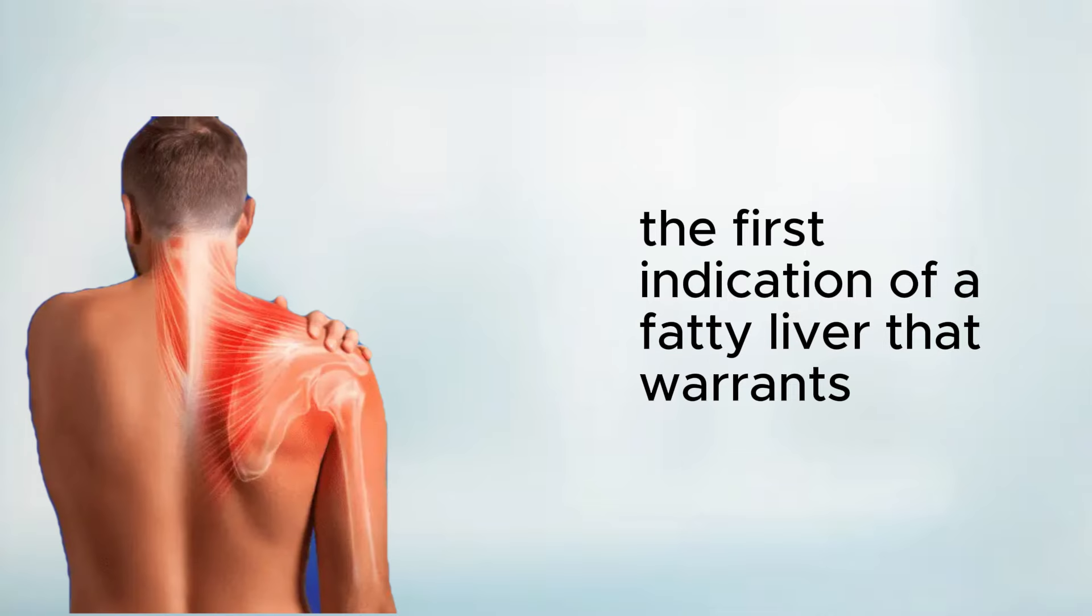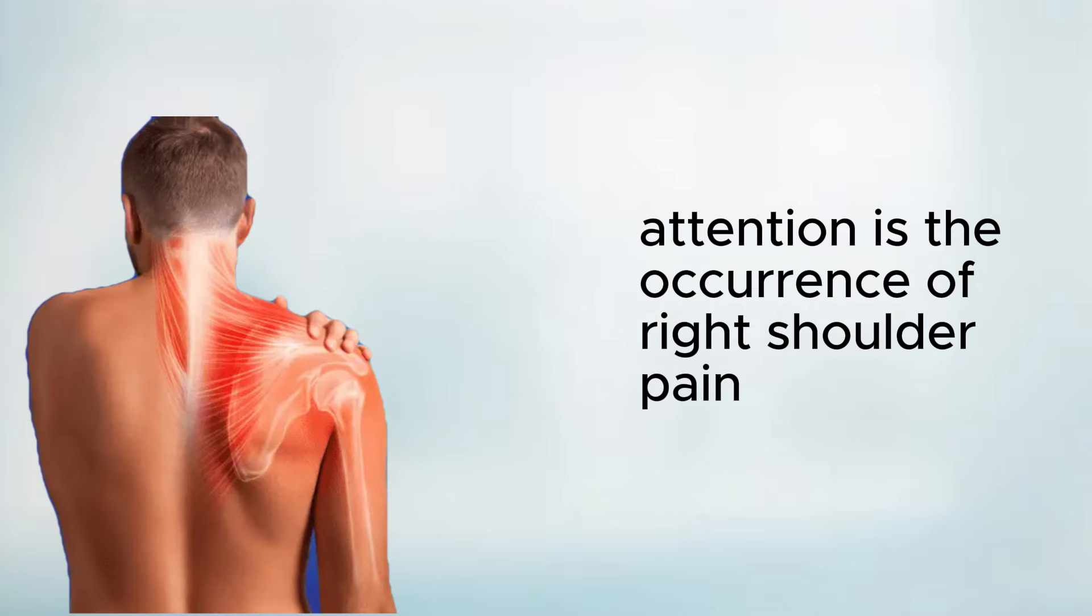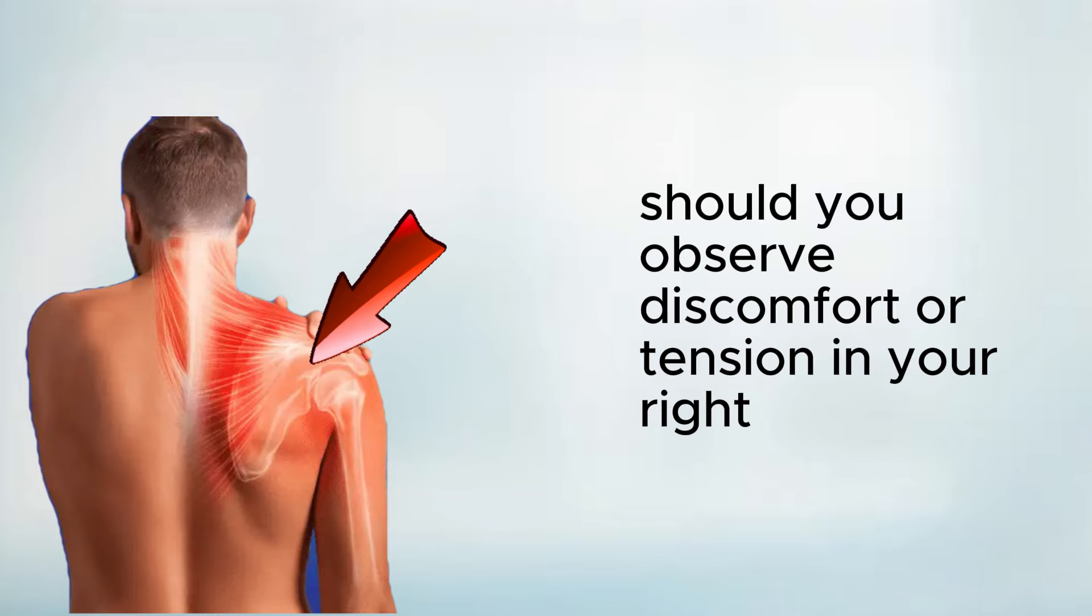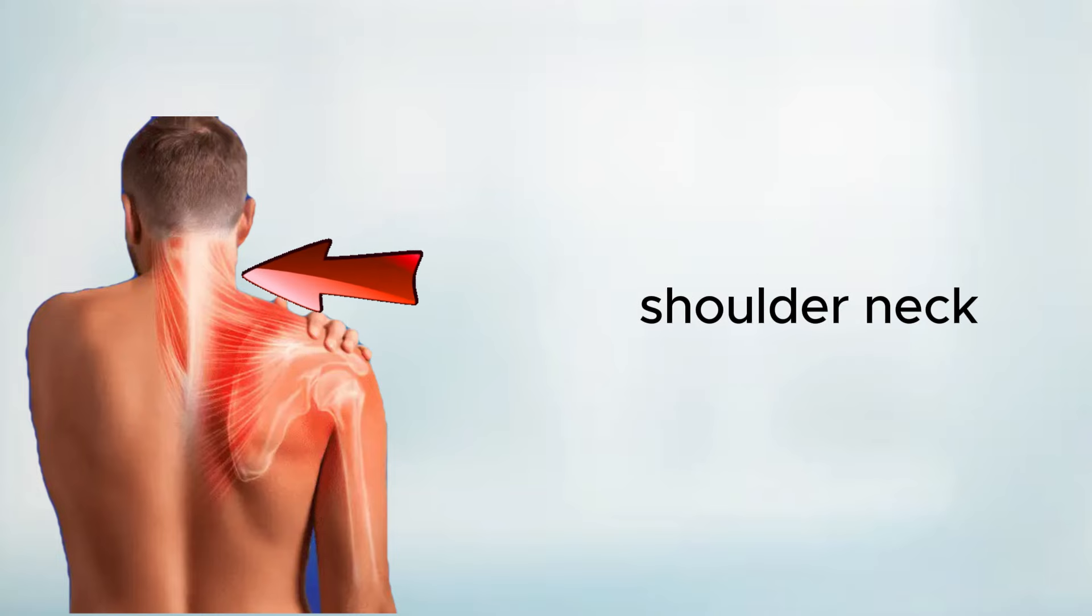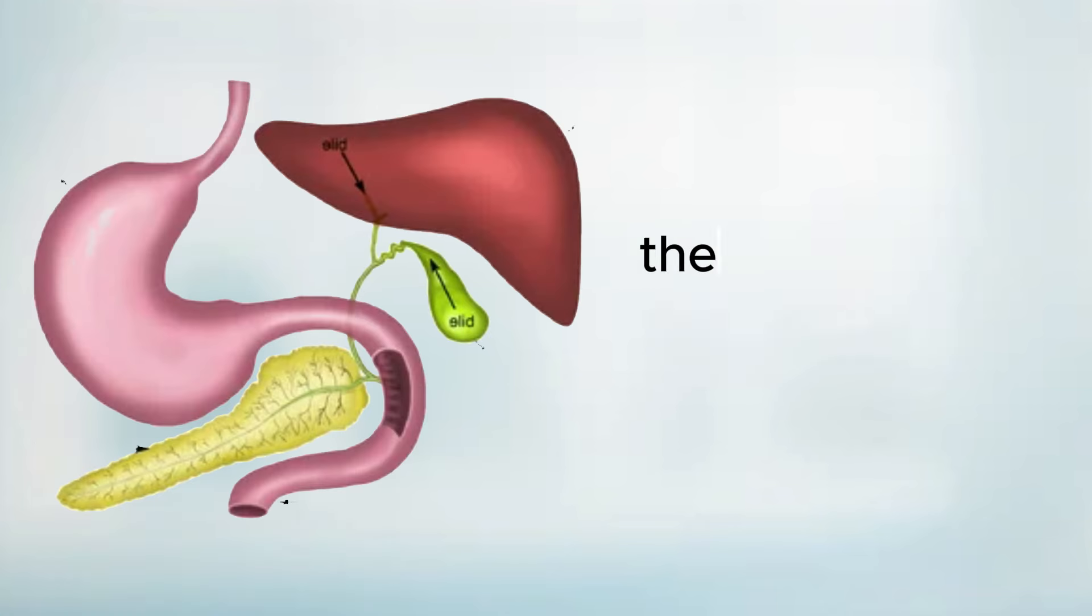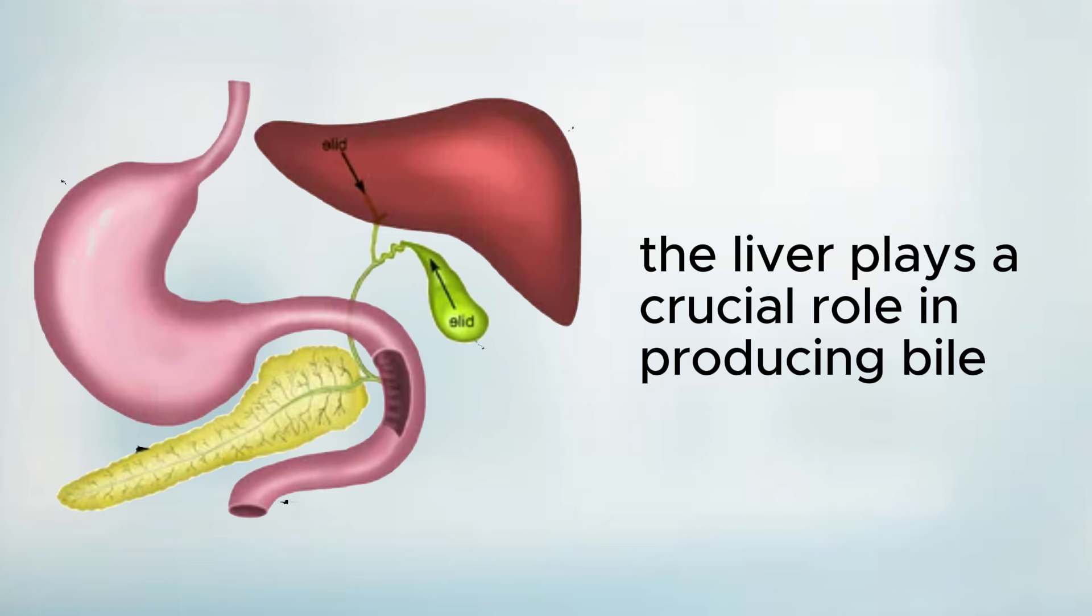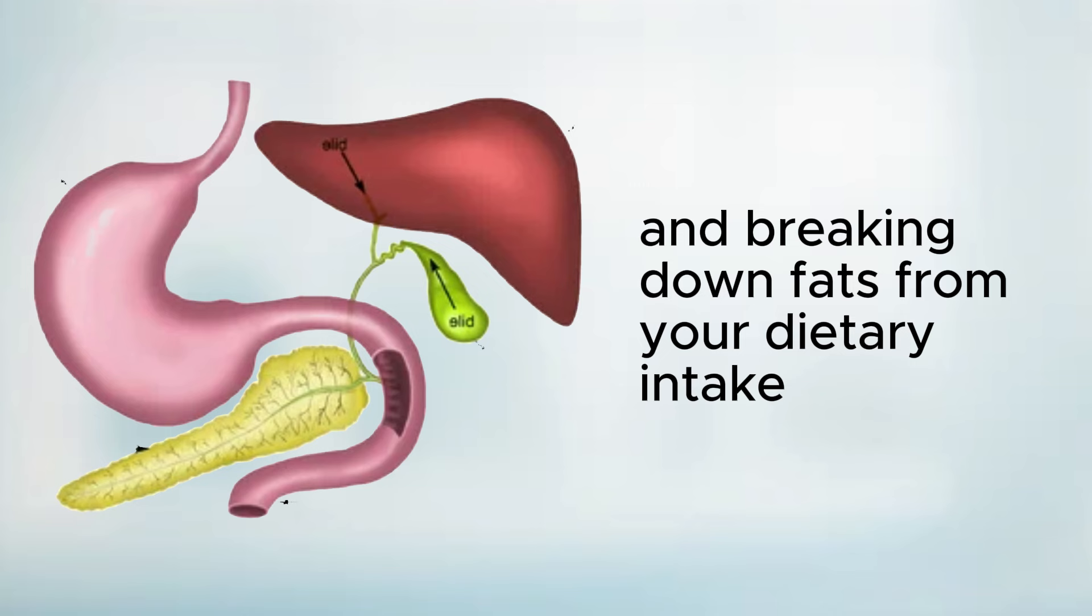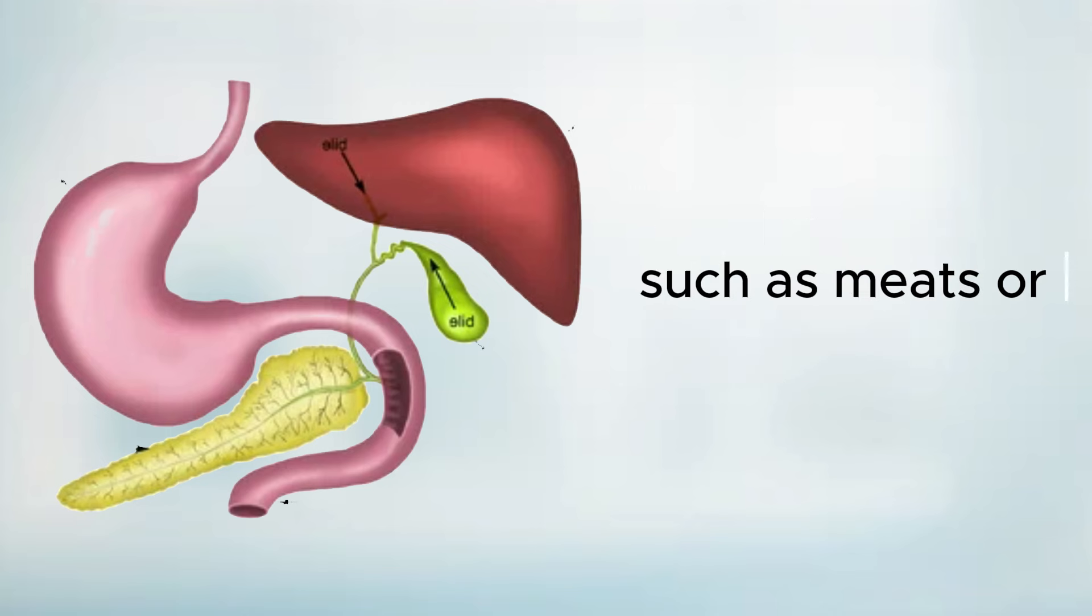The first indication of a fatty liver that warrants attention is the occurrence of right shoulder pain. Should you observe discomfort or tension in your right shoulder, neck, jaw, or beneath the shoulder blade, it may be linked to a fatty liver. The liver plays a crucial role in producing bile, a liquid essential for digesting and breaking down fats from your dietary intake, such as meats or olive oil.